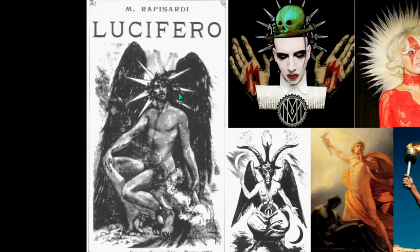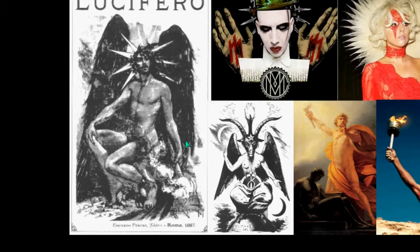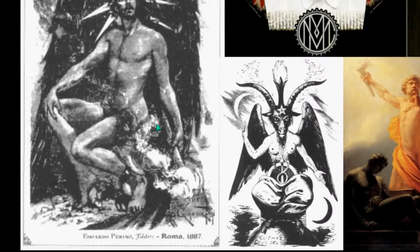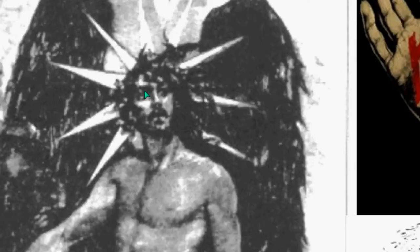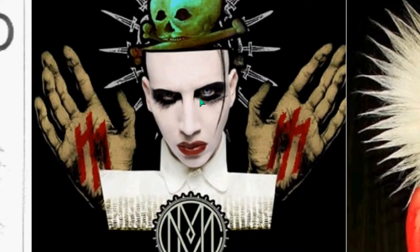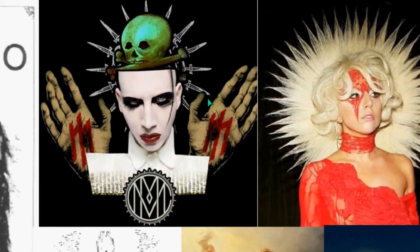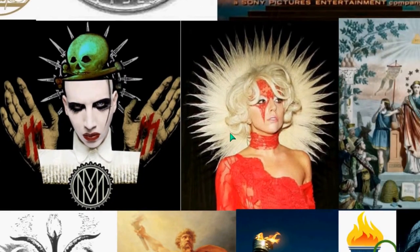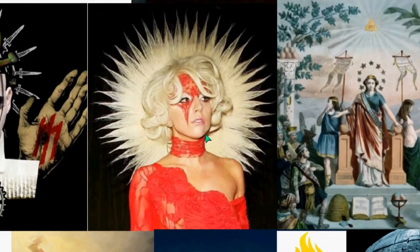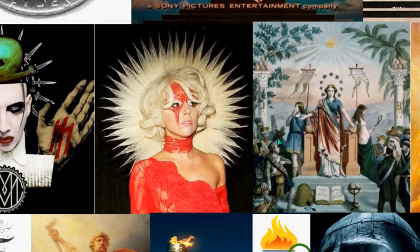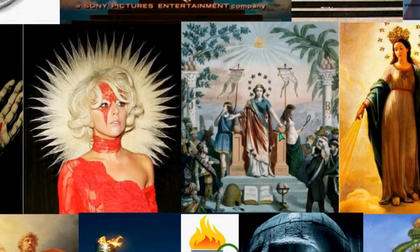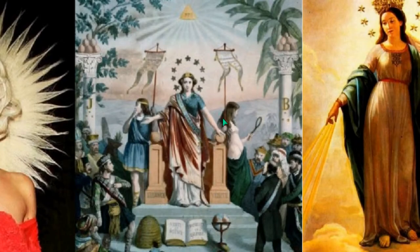Moving on to Lucifer — you see the Torch of Enlightenment and the sun rays, and therefore you see Marilyn Manson with these daggers representing that. You have skull and bones up above, a lot of occult symbology there. And then Lady Gaga with her halo looks like sun rays done in a hairdo. This is a Masonic description of the same goddess.